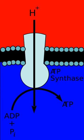In Complex IV, cytochrome C oxidase (EC 1.9.3.1), sometimes called cytochrome AA3, four electrons are removed from four molecules of cytochrome C and transferred to molecular oxygen, producing two molecules of water. At the same time, eight protons are removed from the mitochondrial matrix, although only four are translocated across the membrane, contributing to the proton gradient. The activity of cytochrome C oxidase is inhibited by cyanide, carbon monoxide, azide, and hydrogen sulfide.